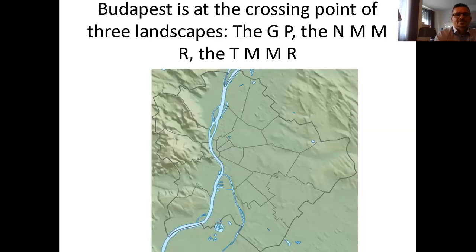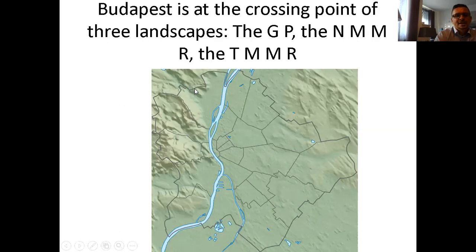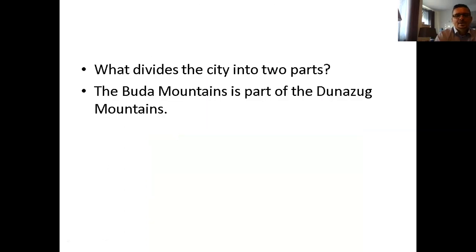Budapest is at the crossing point of different landscapes, so there are lots of different landforms. The Great Plain (GP) is a big lowland basically. The northern middle mountain range is just in the northeastern part of the city. And the Trans-Danubian mountain range with the Dunazug mountains — the Budai hills — and the Visegrád mountain range is not that far. So we can have the hilly areas in Buda as well.